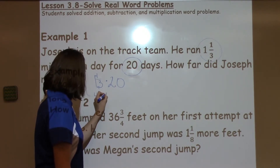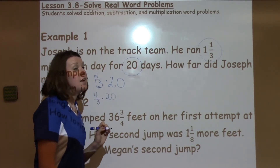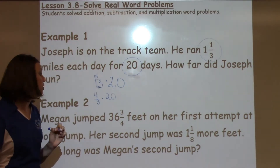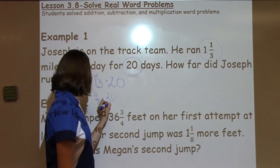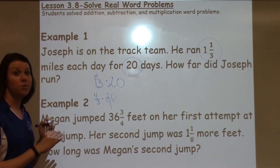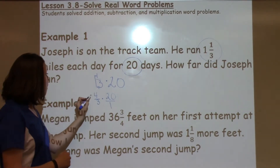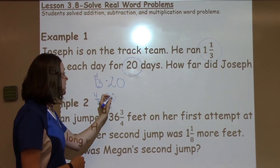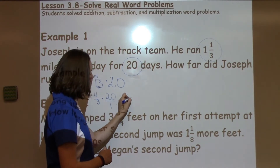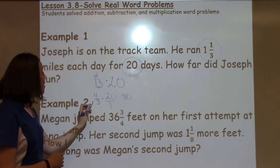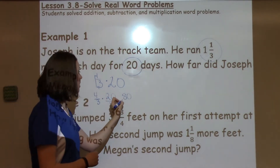Now I'm going to multiply that by 20. I need to change 20 into a fraction, which is the same as 20 over 1. I can go ahead and multiply straight across right now. 4 times 2 is 8, add my 0 is 80, which is an extended fact. Then I can take 3 times 1 is 3.